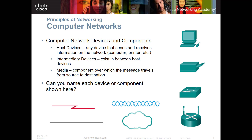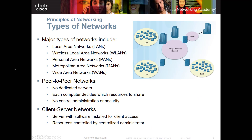When we're looking at types of networks, we have lots of different types depending on size and types of connections. A local area network (LAN) is a group of host devices or end devices connected together so they can see each other. You might have two or three computers connected to a printer — that would be an example of a local area network.